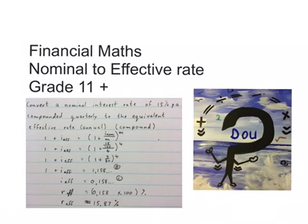Good day. In this video, we're going to convert a nominal interest rate of 15% per annum compounded quarterly to equivalent effective rate, that means annual rate, and show you the formula that we use.